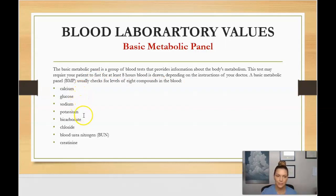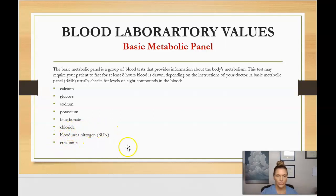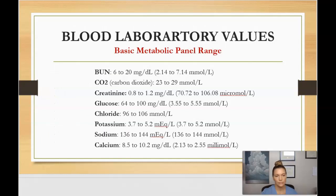The BMP also checks blood urea nitrogen, or BUN, and creatinine. The BUN and creatinine are big indicators of how well the kidneys are functioning, so you'll see those very often and they will be important for you to know. Here are the basic metabolic panel reference ranges.